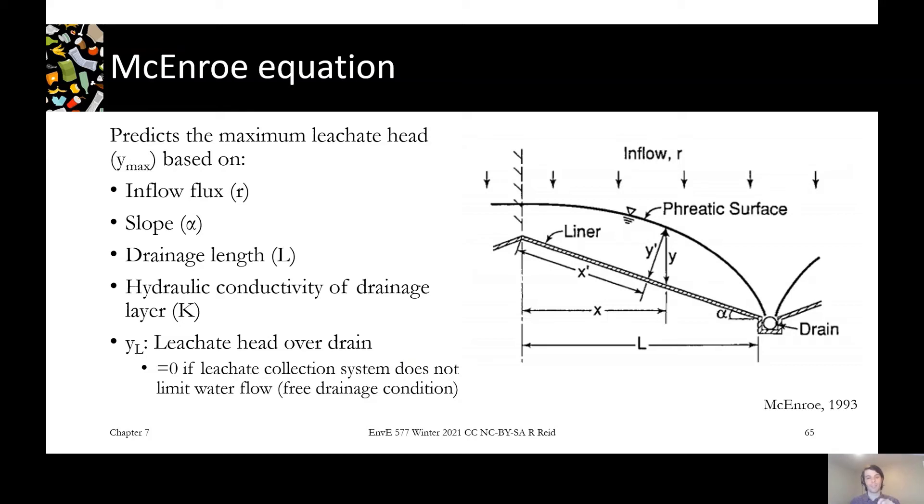Also specified in the model is the head over the leachate drain. If you set that to zero, that means there's no residual pressure in the drain. It's kind of once it hits the drain, it's automatically out of the system. The flux, the slope, the drainage length, and the hydraulic conductivity are all the physical things that you would be building as an engineer.